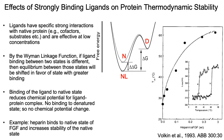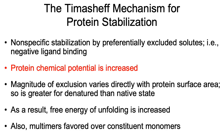By lowering the free energy of the native state and not the denatured state, we get a much larger barrier between the native and denatured state. This is called the Wyman linkage function. In terms of practical use of this mechanism, here's an example with heparin stabilizing fibroblast growth factor. Heparin binds very strongly to the native state but not to the denatured state, and depending on the weight ratio, you can see a large increase in the apparent melting temperature for this protein.